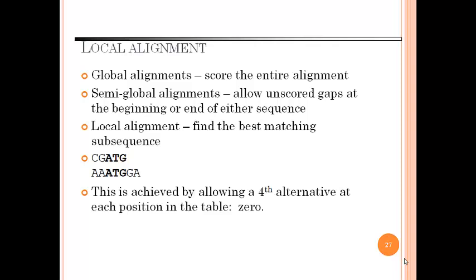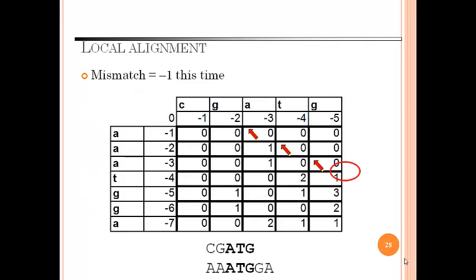Local alignment. Like global alignment it scores the entire alignment. Semi-global alignment allows unscored gaps at the beginning or end of either sequence. Local alignment finds the best matching subsequence: C, G, A, T, G and A, A, A, T, G, C, A. This is achieved by allowing a fourth alternative at each position in the table. This is the figure for the local alignment technique. Here the mismatch is minus 1 for the given example.